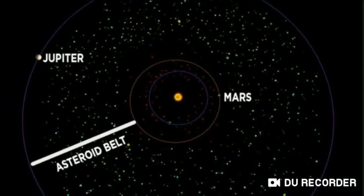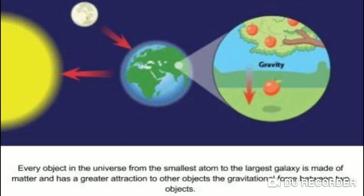Between the planets Mars and Jupiter there is a band of numerous small heavenly bodies; they are called asteroids. Now let us talk about gravity. All heavenly bodies exert a force of attraction, or a pull, on one another. This force is called the force of gravity.